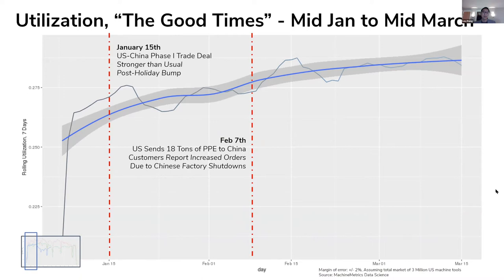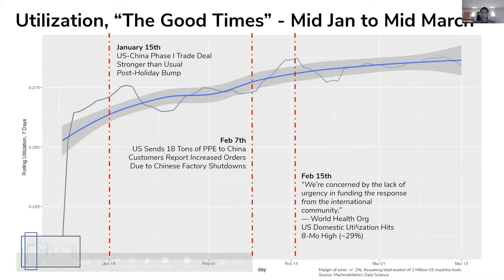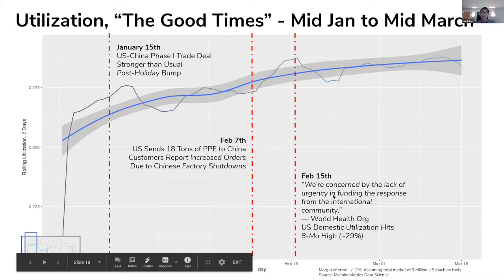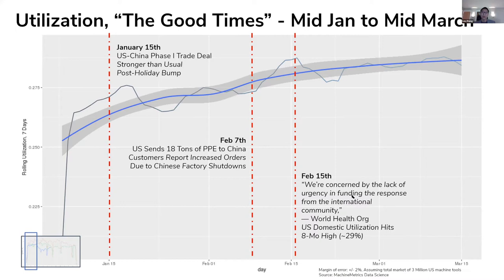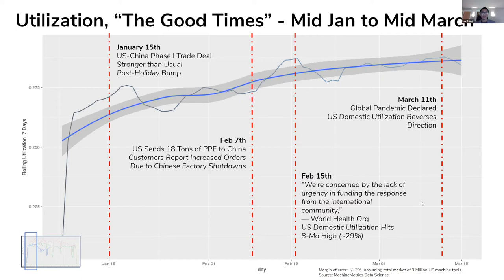On February 7th, we were aware coronavirus was hitting the Far East and sent 18 tons of PPE over to China. Our customers were internally reporting increased orders due to Chinese factory shutdowns, causing an acceleration in utilization. On February 15th, we hit an eight-month high in US domestic utilization of about 29%. Simultaneously, the World Health Organization said they were concerned by the lack of urgency in funding the international response. On March 11th, the global pandemic was declared officially by the WHO and US domestic utilization immediately reversed direction.